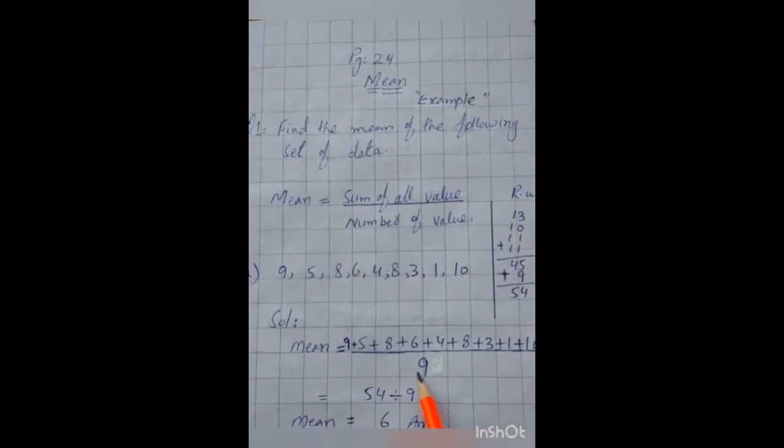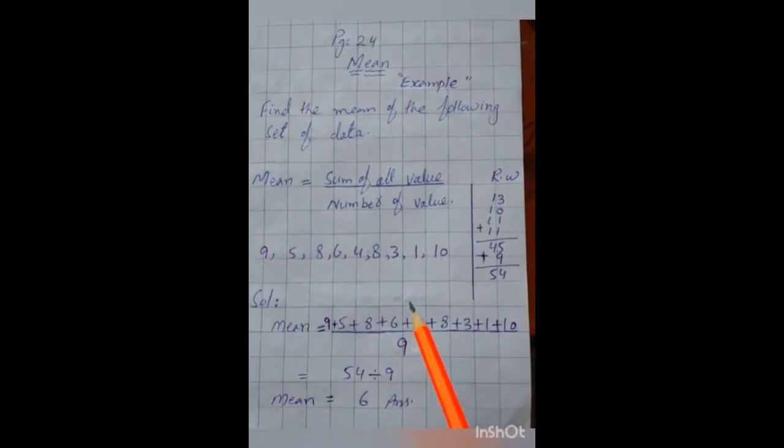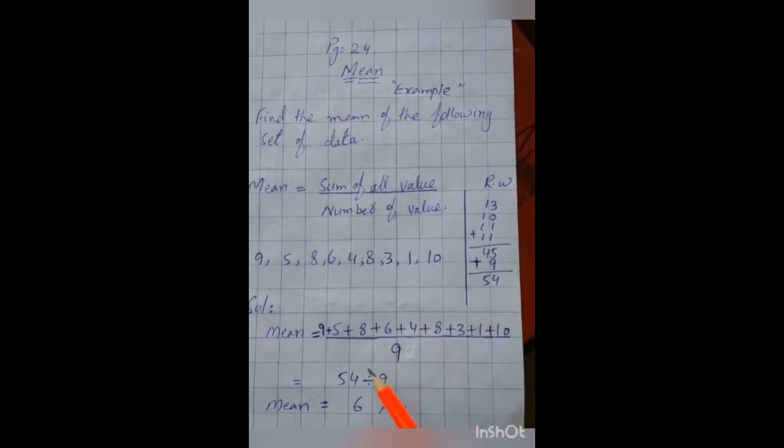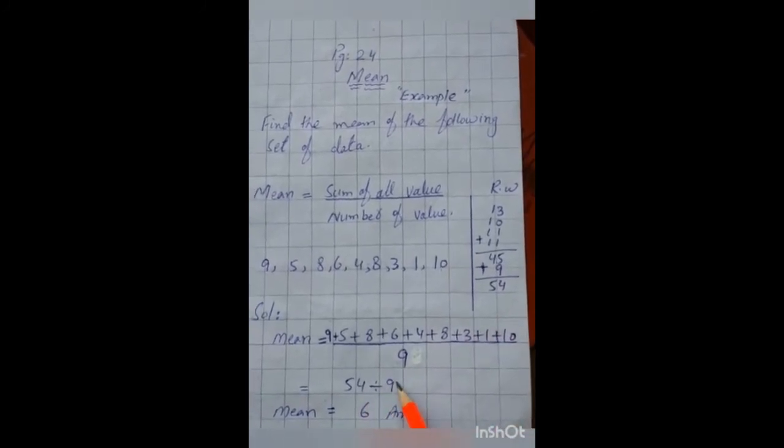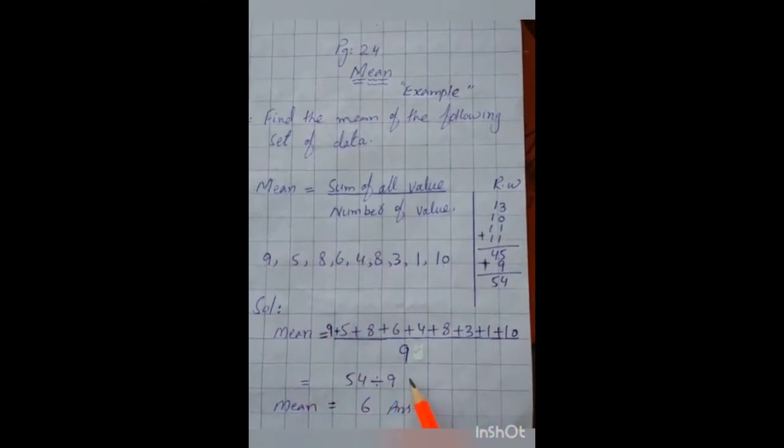Then, we will divide it by 9 because these all are 9. We will use the rough work to add them. It is 54. Now, we will divide 54 by 9 because these all are 9.